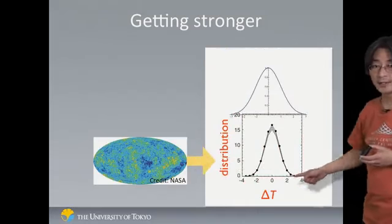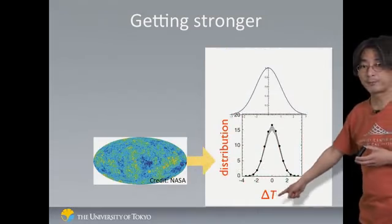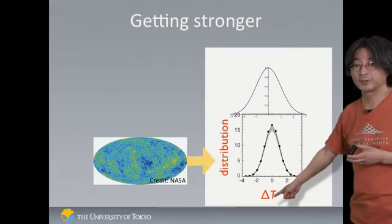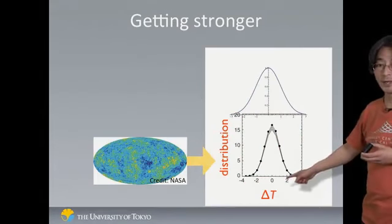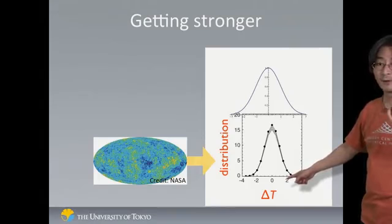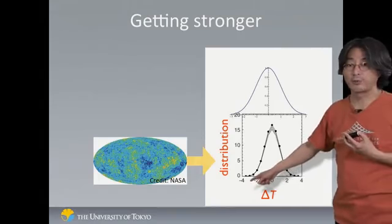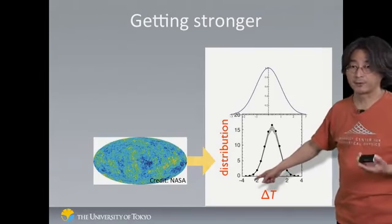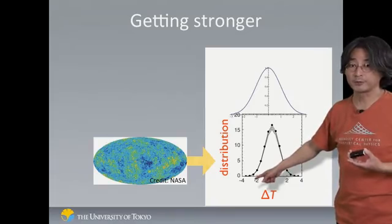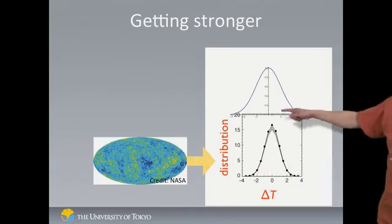So this horizontal axis here tells you how much temperature is different from the average. So here it's twice as big compared to the typical variation. Here it's twice as less than the typical variation you have among the temperatures. And indeed you see a beautiful bell curve.